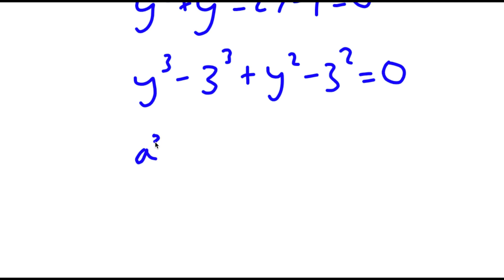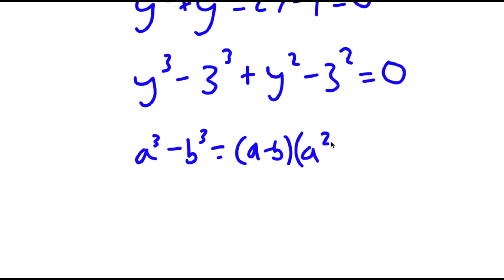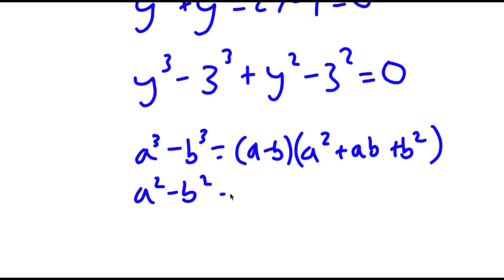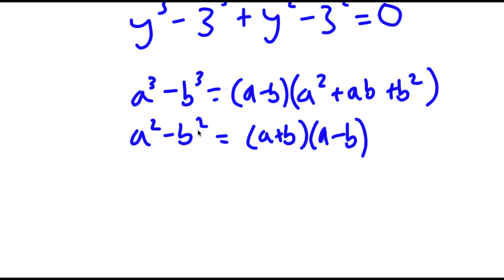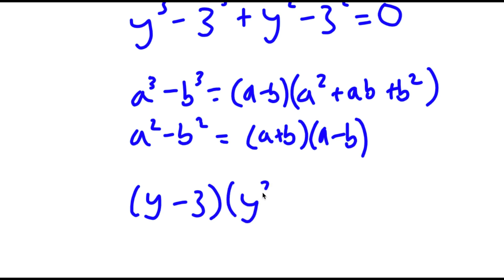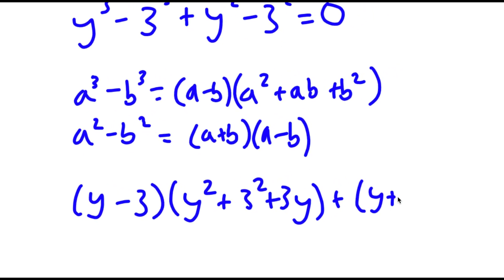If I have a to the power of 3 minus b to the power of 3, this equals a minus b times a squared plus ab plus b squared. And if I have a squared minus b squared, this equals a plus b times a minus b. So I can rewrite y cubed minus 3 cubed as y minus 3 times y squared plus 9 plus 3y, plus y squared minus 3 squared as y plus 3 times y minus 3, all equal to 0.